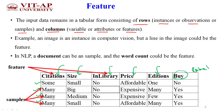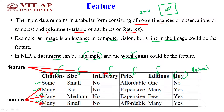For example, in computer vision an image is an instance, but a line or edge in the image could be a feature. Consider a two-by-two image with two columns and two rows of pixels — a leaf shape may have edges, and those edges are the features for that picture. In NLP, a document is the sample and the word count is called a feature.